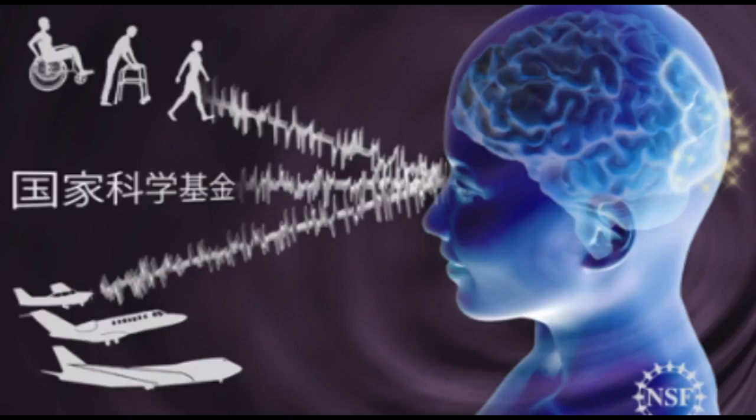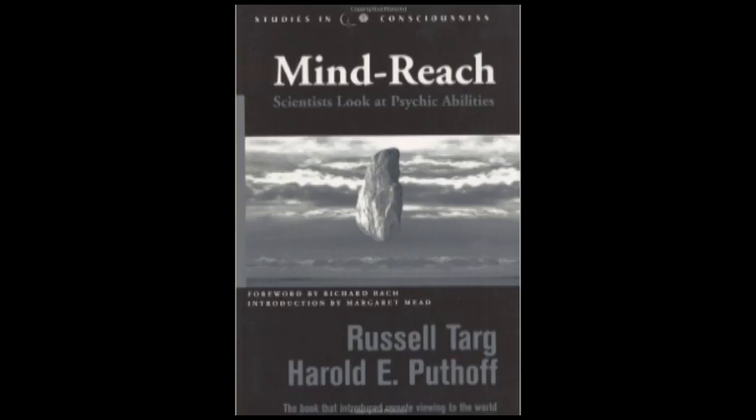In trials of remote viewing, utilizing blind and double-blind experimental protocol, an invisible stimulus, a target, which could be an image, place, event, object, or structure, is hidden from conscious perception.